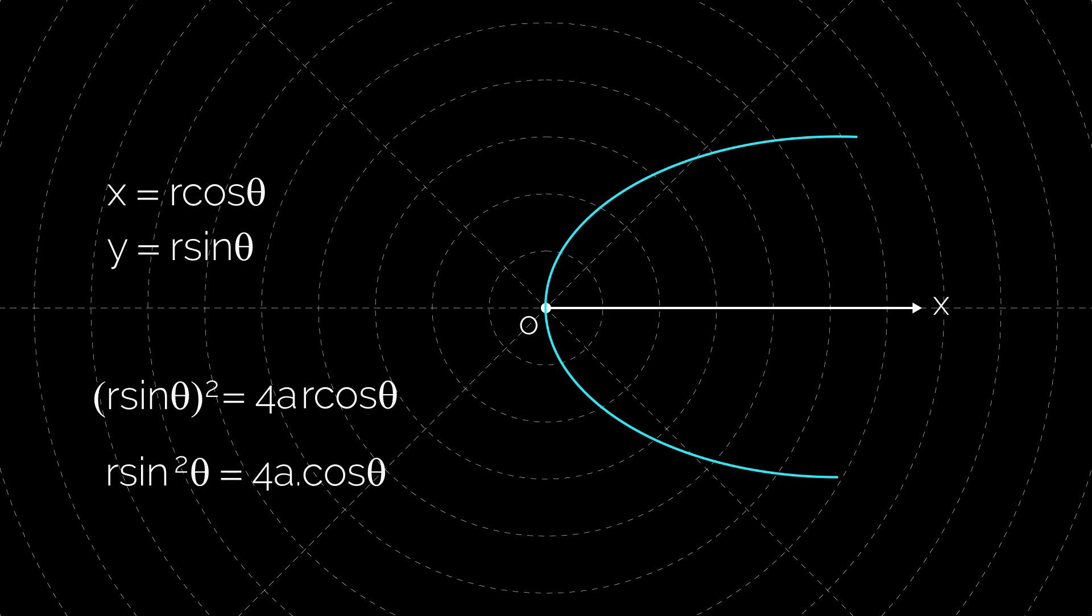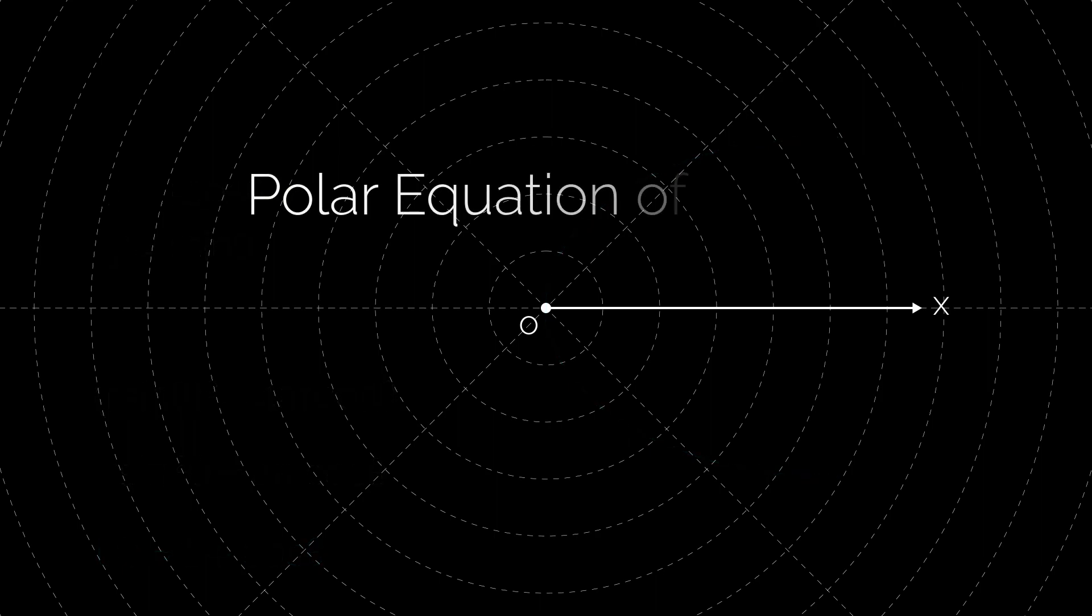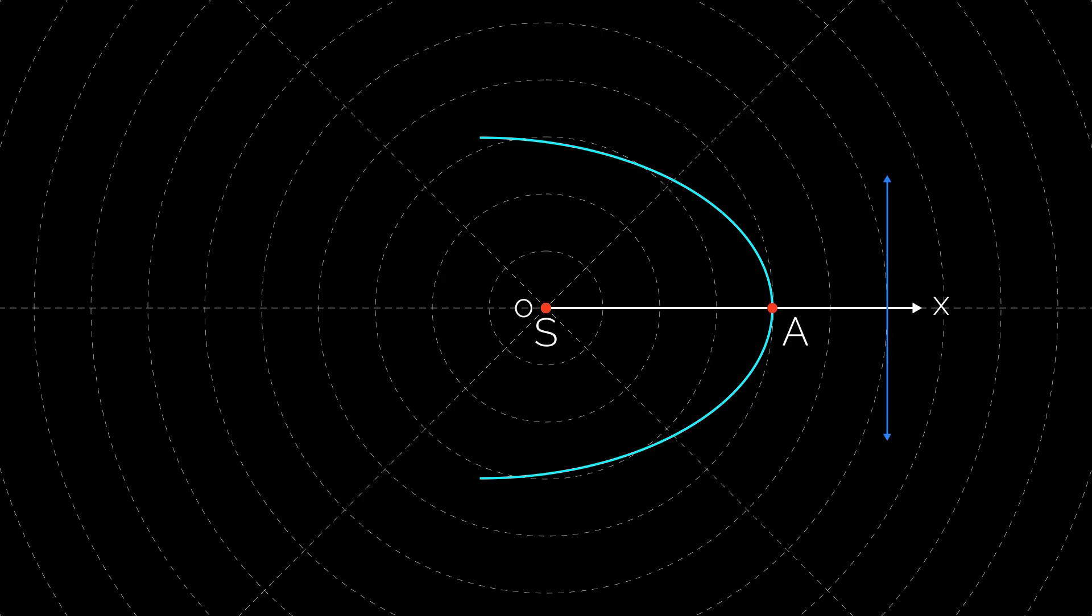But the general equation of parabola is l/r = 1 + cos θ. In this video we are going to learn about the equation of conics.